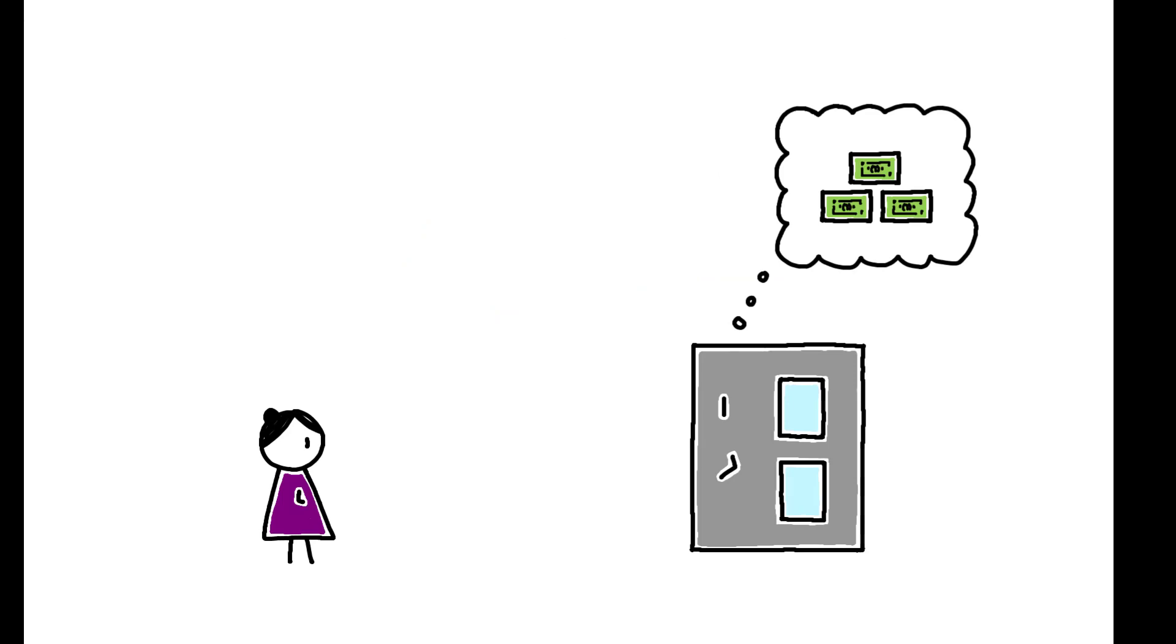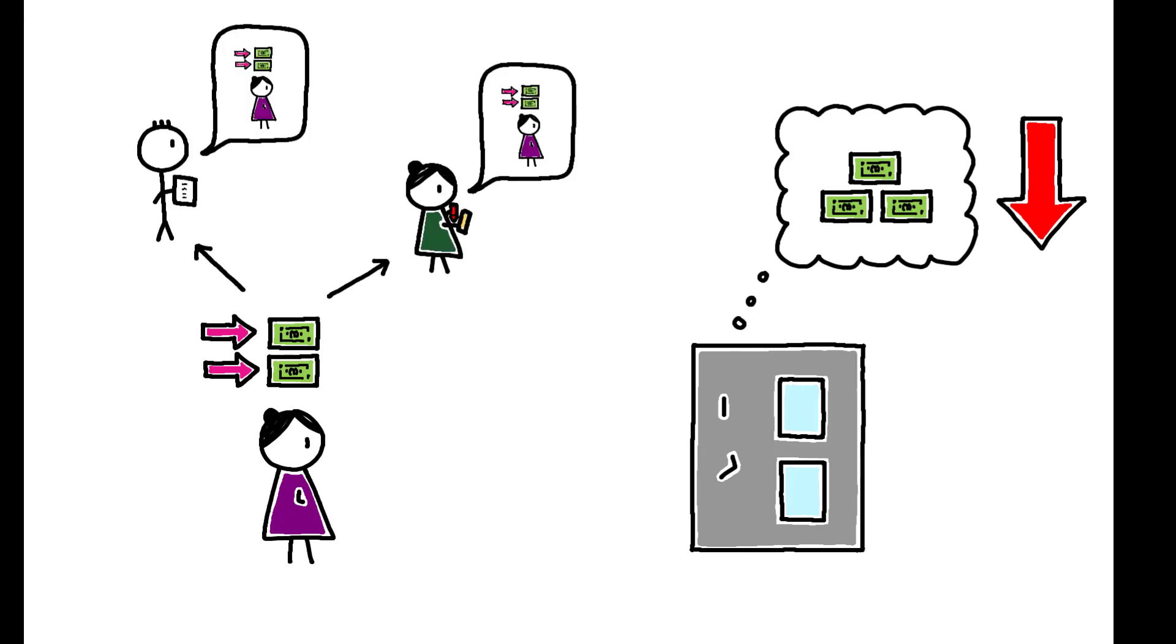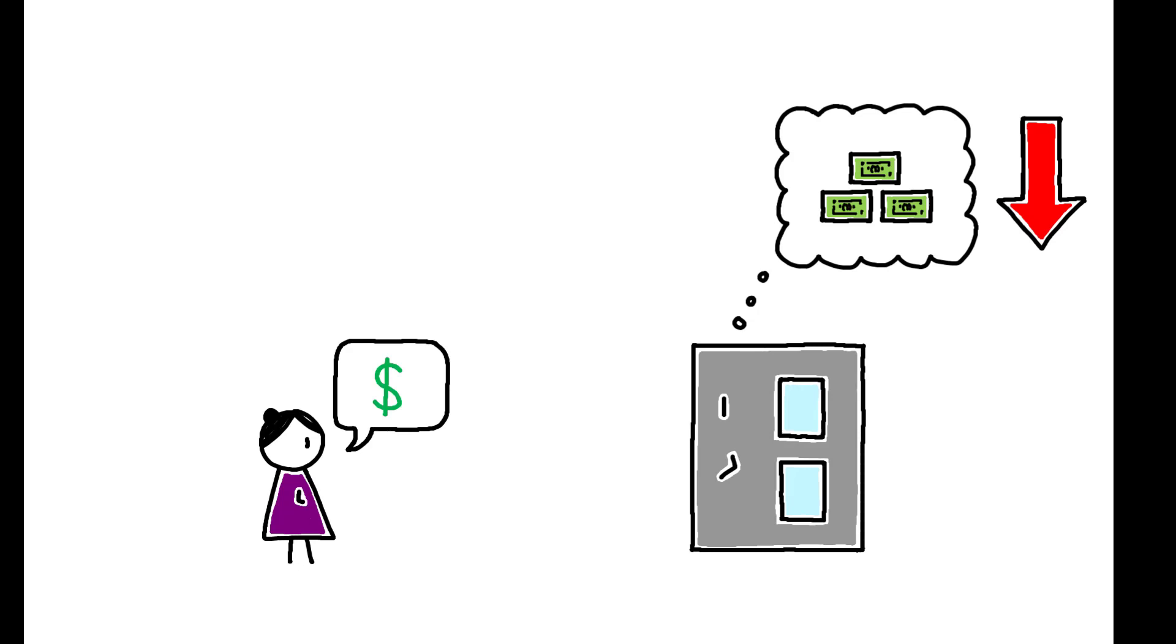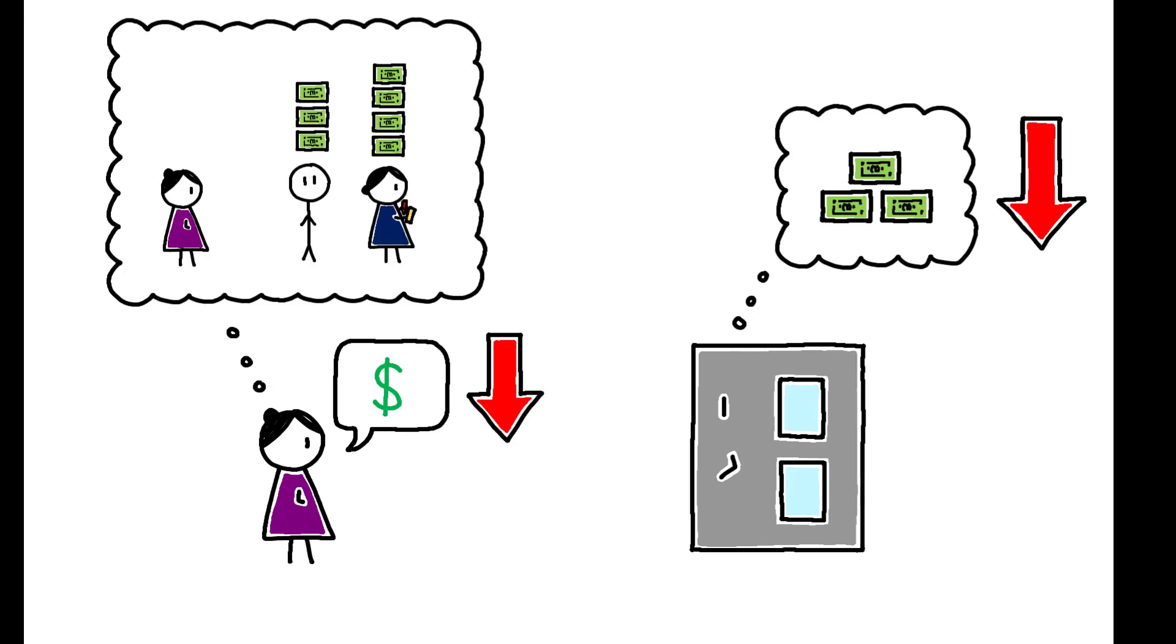On the firm side, transparency reduces the maximum willingness to pay for labor. Granting pay raises is now more costly, as information about one worker's raise will be used by others to renegotiate their own wages. At the same time, transparency also induces workers to lower their initial wage offers to increase their chances of getting hired. Because workers anticipate being able to quickly learn the wages of others and then renegotiate, they become less concerned with securing a high initial wage.